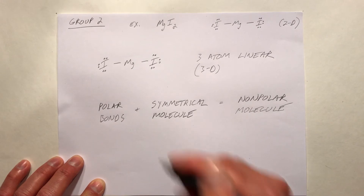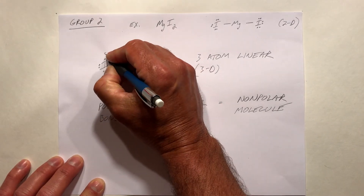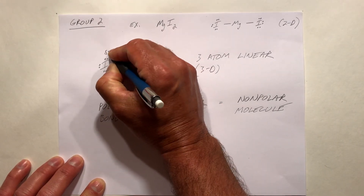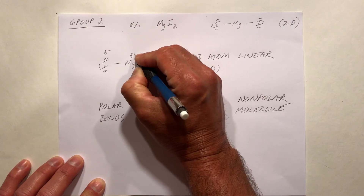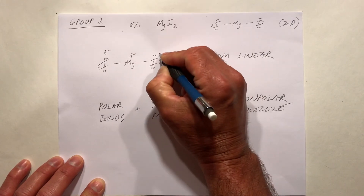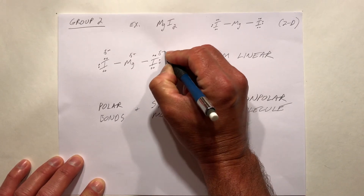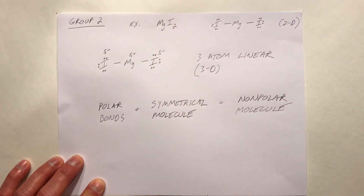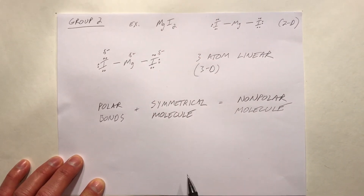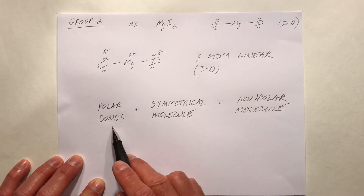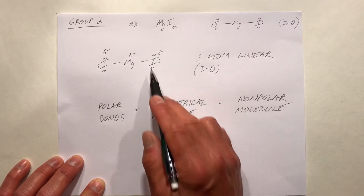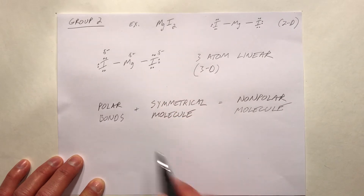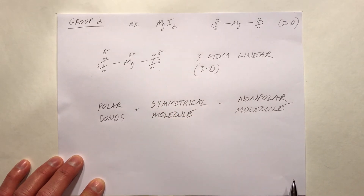The iodine would be delta minus and the magnesium would be delta plus, so we would have polar bonds. Iodine is a little bit more electronegative than magnesium.